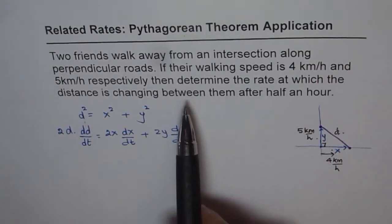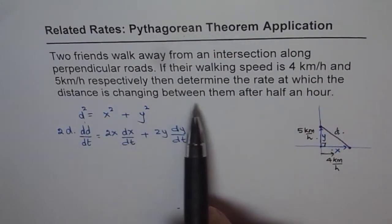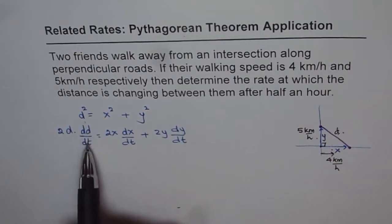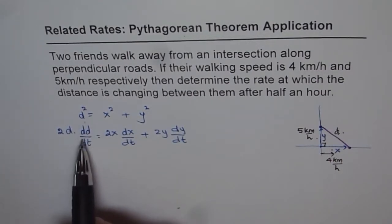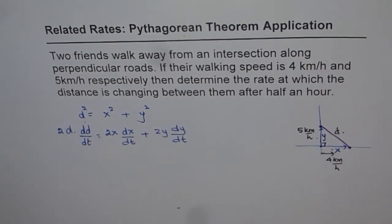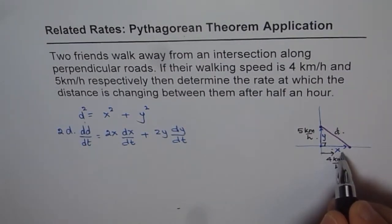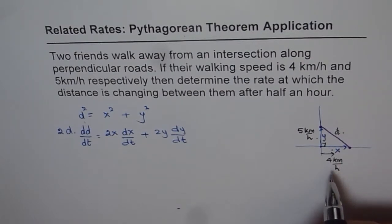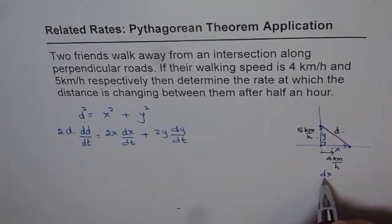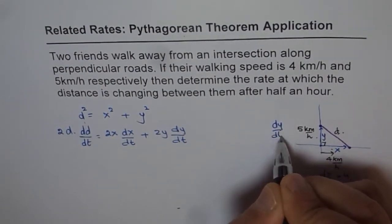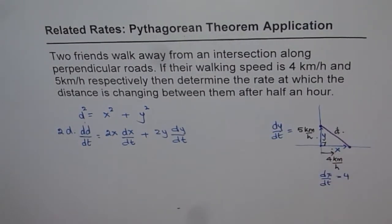The question says the rate at which the distance is changing between them, that means we want this dd/dt. This is what we want to figure out, by how much is it changing. So that is your general equation. Now, as you can see, along x, the rate of change is the speed with which the person is walking. So we know from here that dx/dt is 4, and dy/dt is actually 5. Now we need to know x and y.